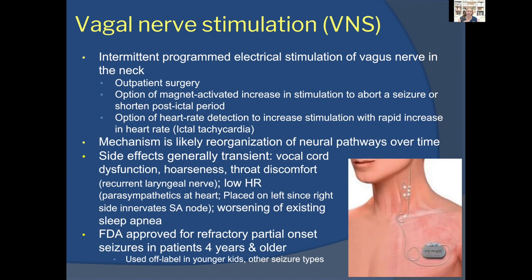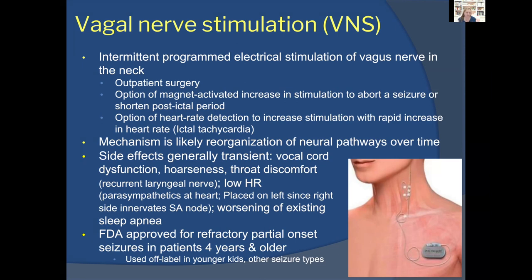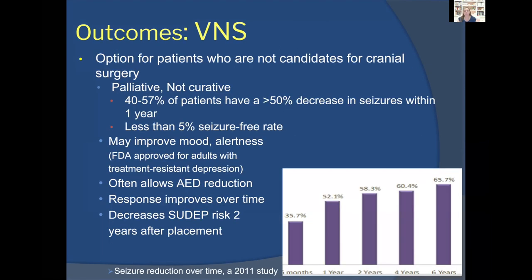VNS side effects are generally small — typically transient vocal cord dysfunction or hoarseness. It is an outpatient surgery taking about an hour, and patients go home the same day. It is FDA-approved for children over a certain age, though used off-label in younger children. Importantly, both VNS and RNS are generally palliative rather than curative — temporal lobectomy and amygdalohippocampectomy offer a real chance of seizure freedom, whereas VNS and RNS are used when resection or ablation isn't feasible, but can still significantly improve quality of life.